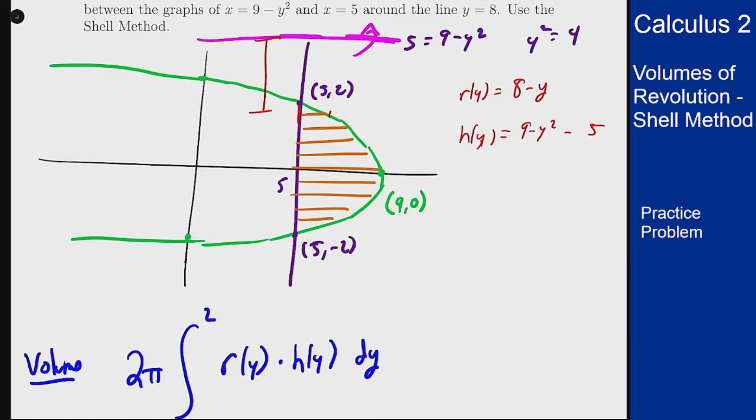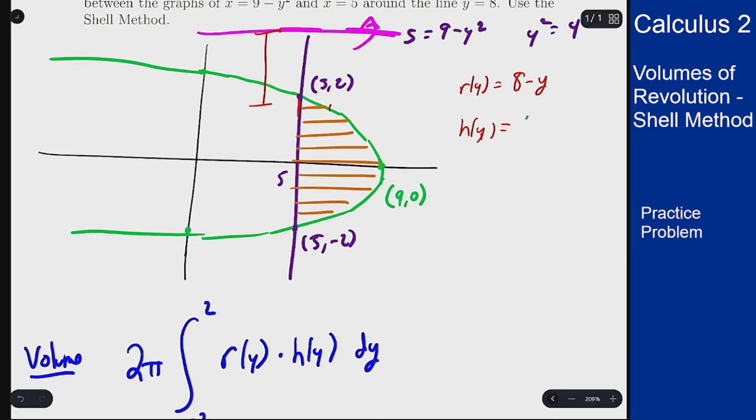Let me write these in color so we see what they look like. 9 minus y squared is the green curve, and then minus the 5, that is the purple curve, which are the positions.